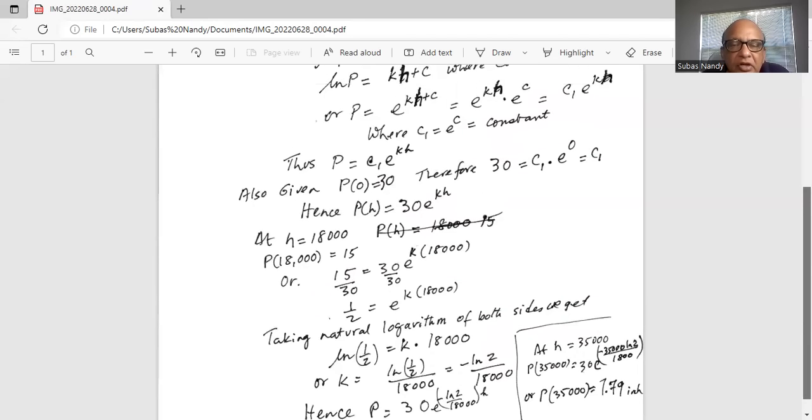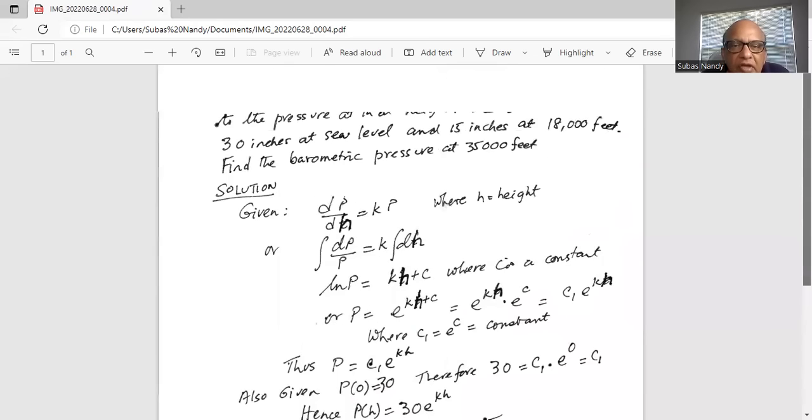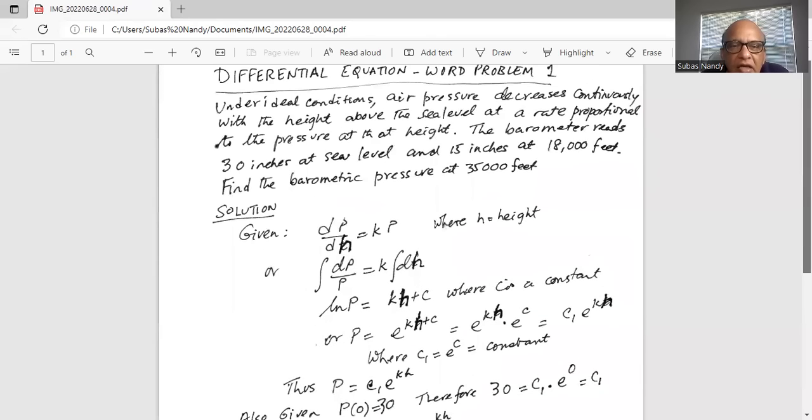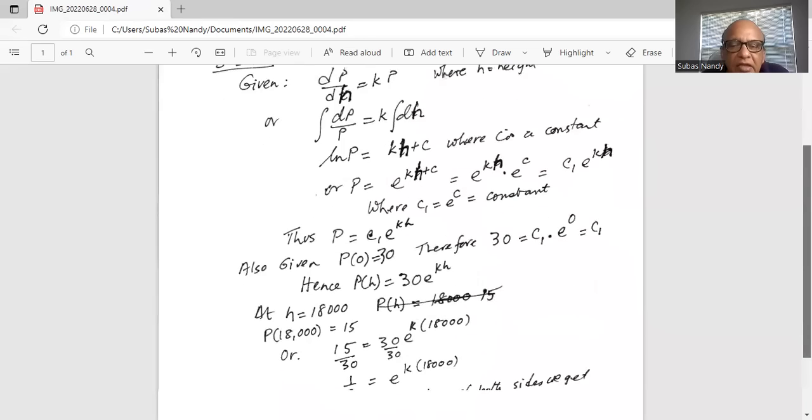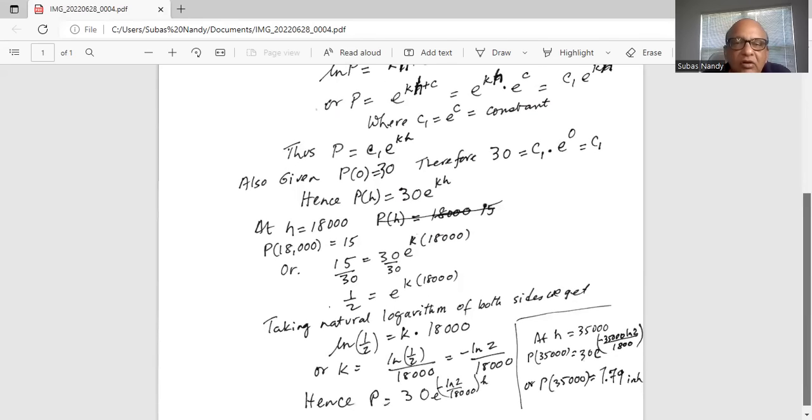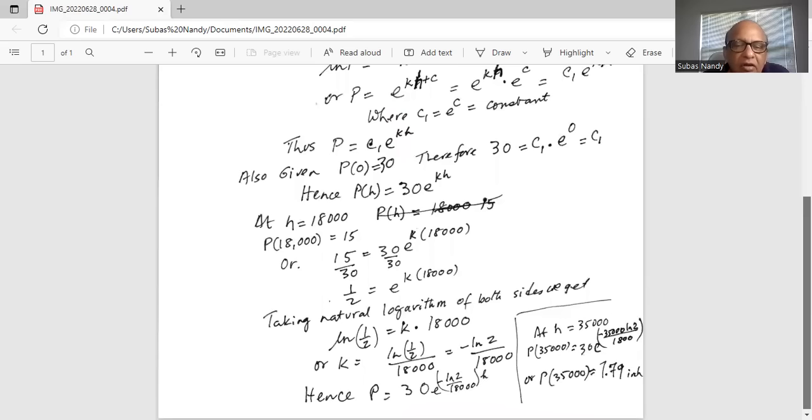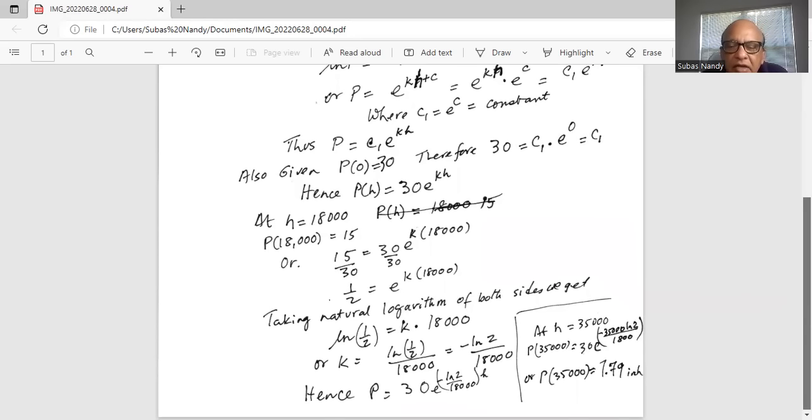So you can see that the pressure decreases rapidly as we increase the elevation. At 18,000 feet pressure is 15 inches barometric pressure. We found out that at 35,000, the barometric pressure is almost half of that, 7.79 inches. That's why when we fly on an airplane, it's always pressurized because the pressure is very low at that height, the elevation at which the plane is flying. So pressure at 35,000 is 7.79 inches.